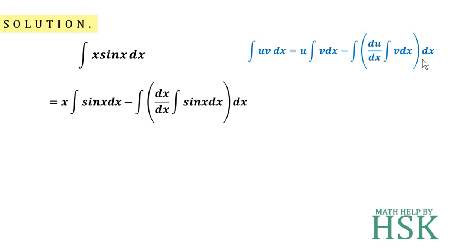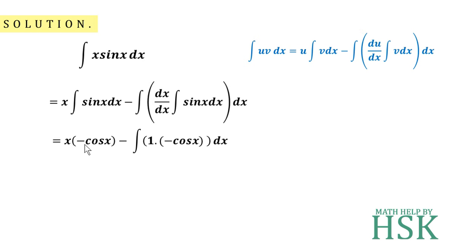Now, integration of sin(x) equals minus cos(x), so I write minus cos(x) in both places. And d/dx of x equals 1. So we obtain: x·(minus cos x), minus 1 into integration of (minus cos x), which is further integrated.